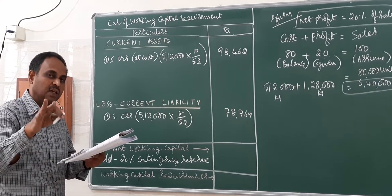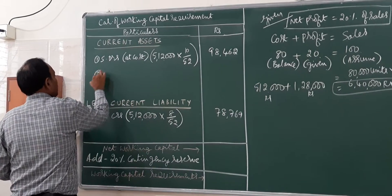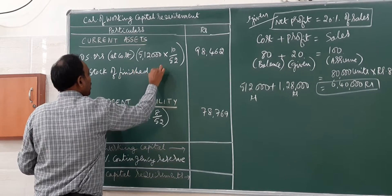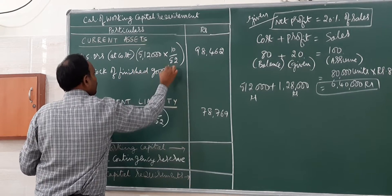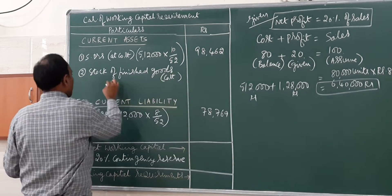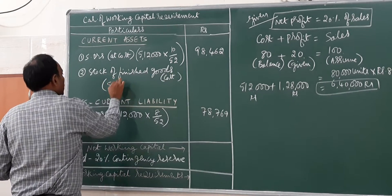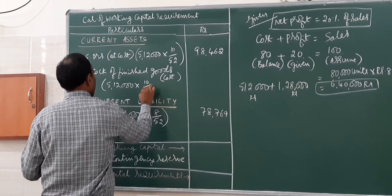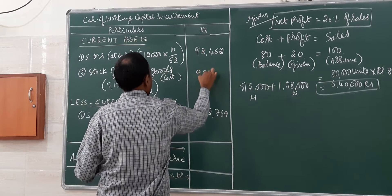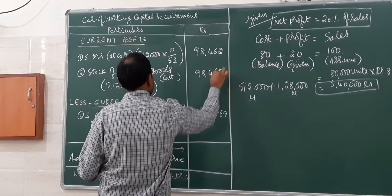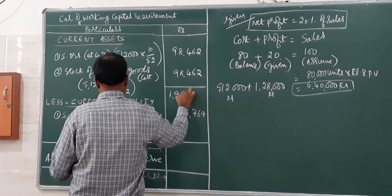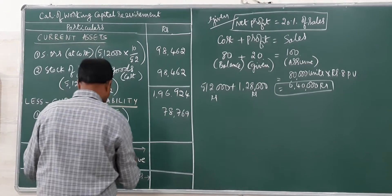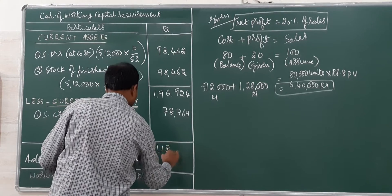The other item is average stock holding in terms of sales requirement. Sales requirement is not raw material — it is always finished goods. So this is connected to stock of finished goods. If you don't have finished goods you cannot sell. Finished goods at cost: five lakh twelve thousand, ten weeks, giving ninety-eight thousand four hundred sixty-two.